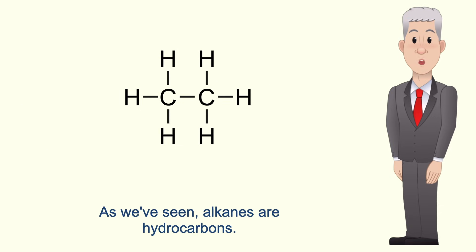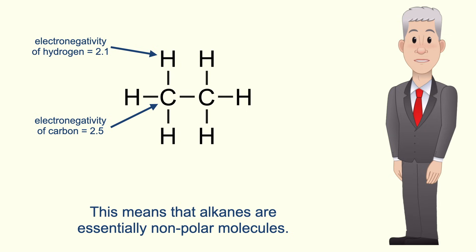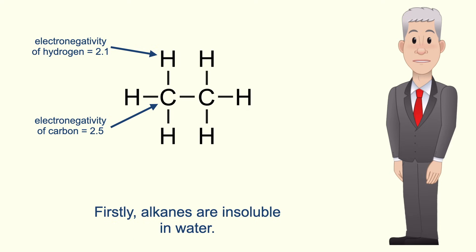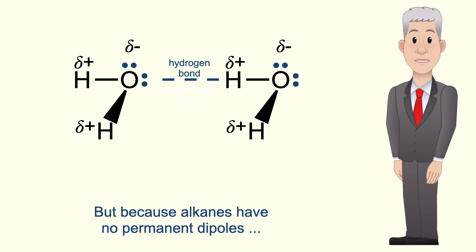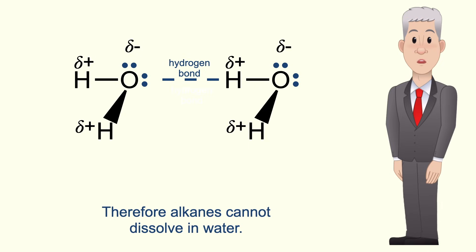As we've seen, alkanes are hydrocarbons. Carbon and hydrogen atoms have a very similar electronegativity, so alkanes are essentially non-polar molecules, and this helps to explain their properties. Firstly, alkanes are insoluble in water. Water molecules form hydrogen bonds with each other, but because alkanes have no permanent dipoles they cannot form hydrogen bonds and therefore cannot dissolve in water.